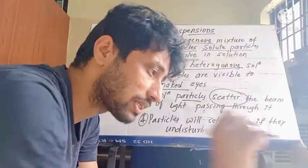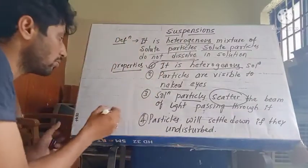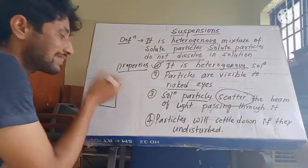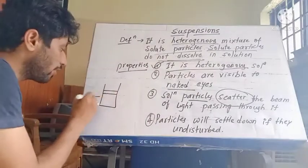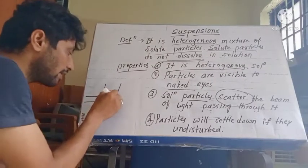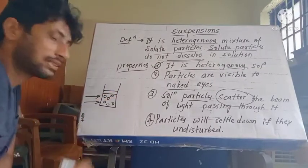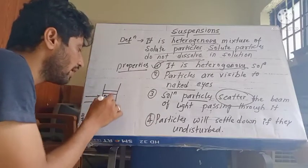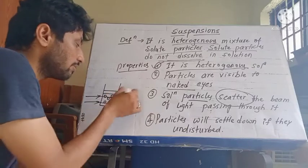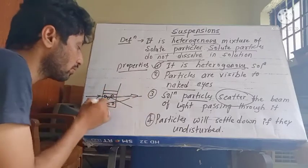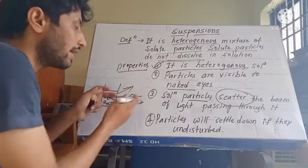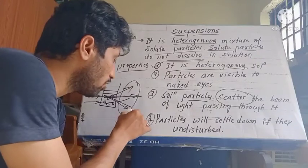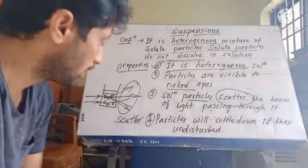In a suspension, when a ray of light passes through it, the light will hit the surface of a particle and change direction — it will deflect like this or like that. So the direction of the light beam changes. This is called scattering of a beam of light.